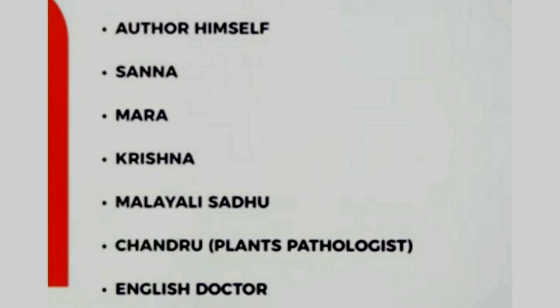Chendru is a plant pathologist, and there is also an English doctor and characters like Masthi, Bhaira, Appanna and others. These are the main characters in the chapter. The entire chapter revolves around a medicinal creeper and how Poornachandra Tejaswi comes across this medicinal creeper.